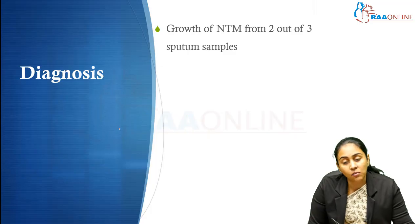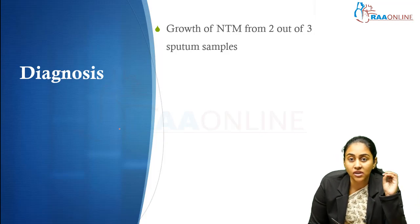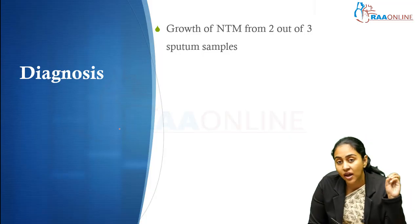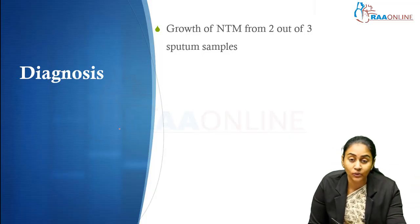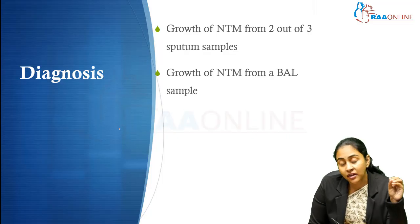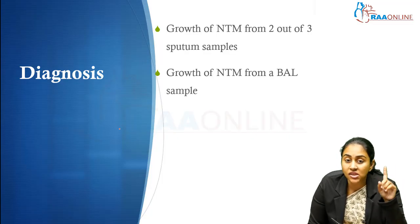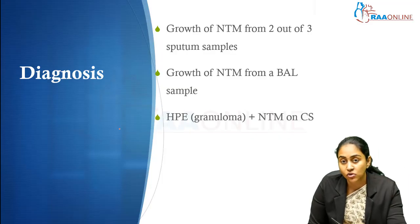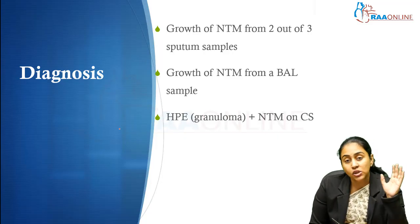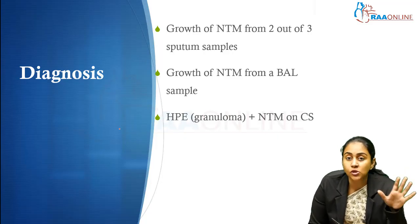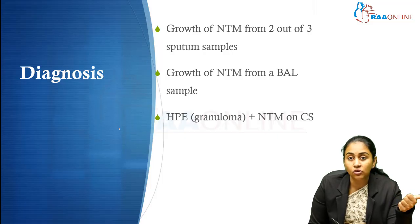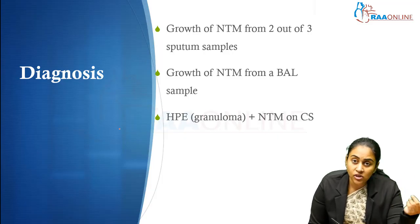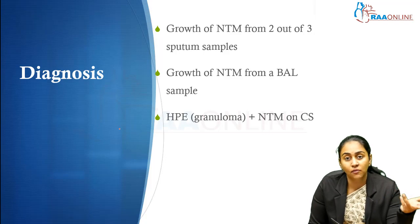Coming to diagnosis, what is currently recommended to make a diagnosis of non-tuberculous mycobacterial infection: we require growth of these non-tuberculous mycobacteria in at least two out of three sputum samples to make a diagnosis of pulmonary NTM based on sputum culture alone. If you are going to make a diagnosis based on a BAL culture, then just a single sample is enough. Or if you are making a diagnosis from histopathology, you need granulomas on histopathology, a positive sputum AFB smear, and growth of NTM on culture.